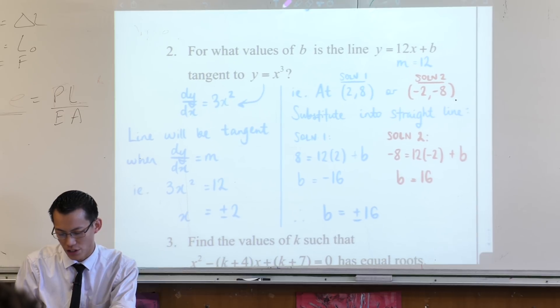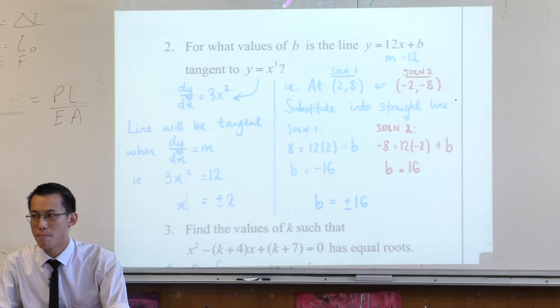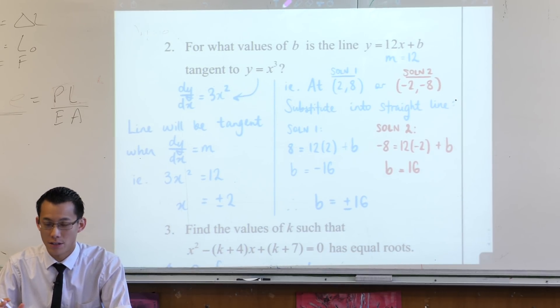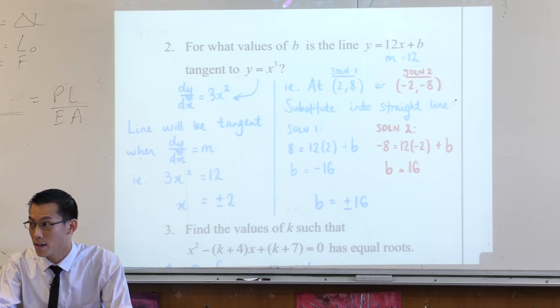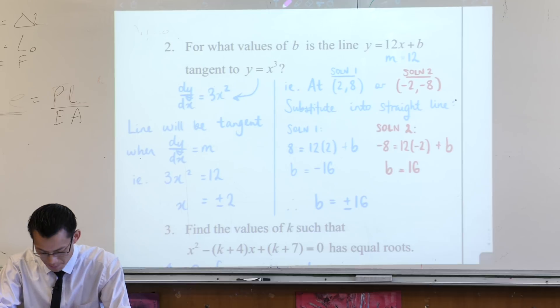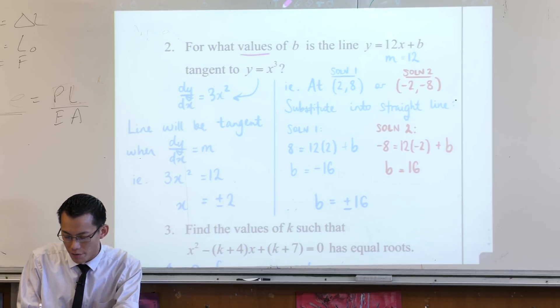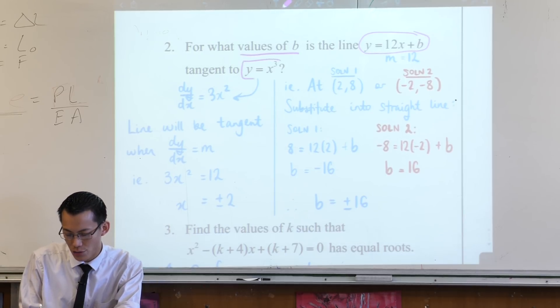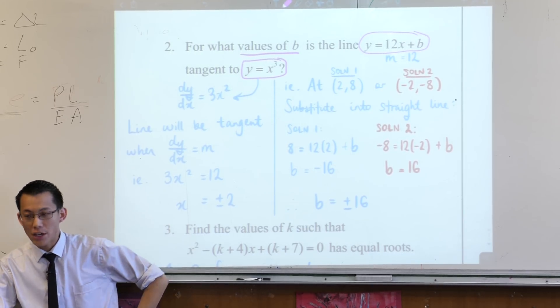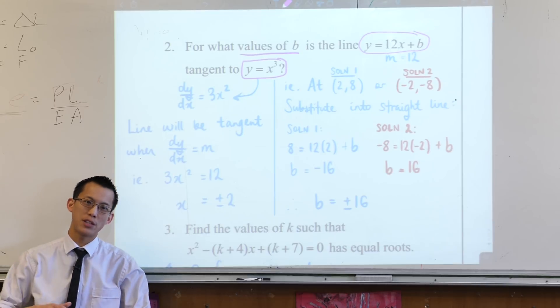Now let's have a look at the question. Just for the people who did get an answer, do I have some agreement? Yes? No? Looking good? Okay. So what did I do? For what values of b is this line tangent to this curve? Okay, now because it's y = x³ you run into a problem.